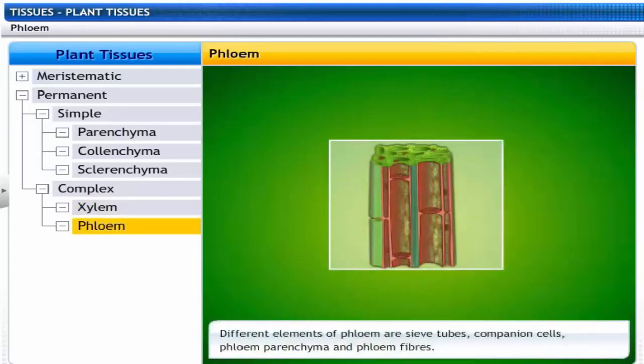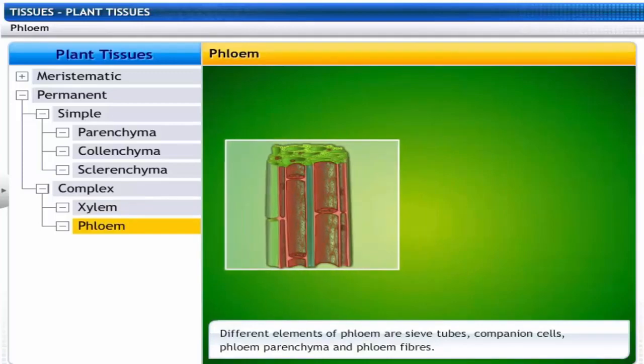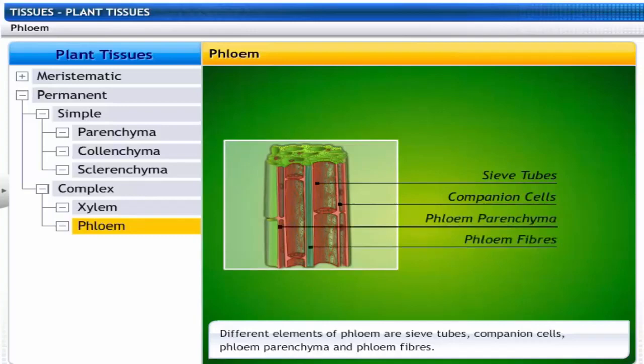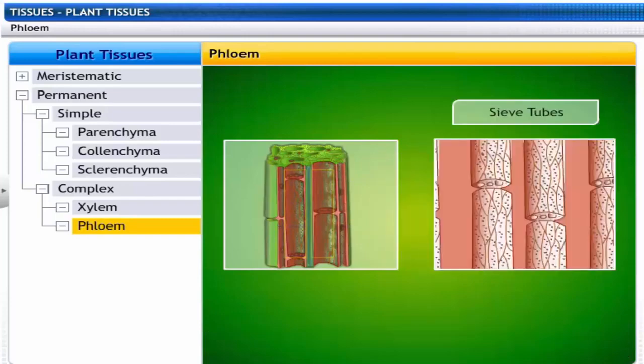Let's now look at the different elements of phloem: sieve tubes, companion cells, phloem parenchyma, and phloem fibers. Sieve tubes are elongated living cells.